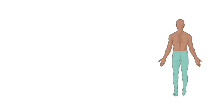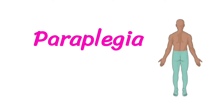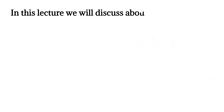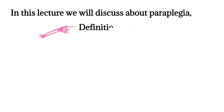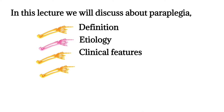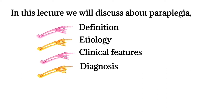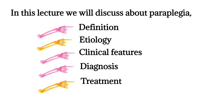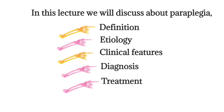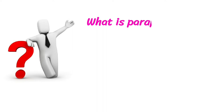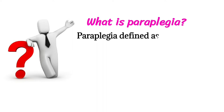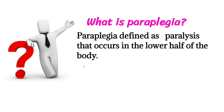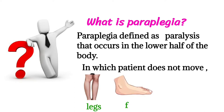Bismillahirrahim, welcome to my channel Dr. School. Today our lecture is about paraplegia. In this lecture we will talk about the definition, etiology, clinical features, diagnosis, and treatment of paraplegia. Paraplegia is defined as paralysis that occurs in the lower half of the body, in which patients cannot move their legs, feet, and stomach muscles.